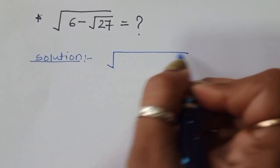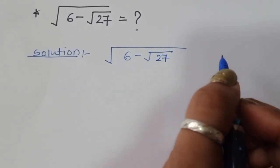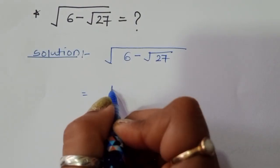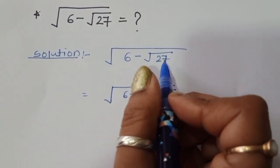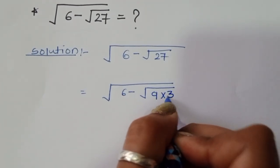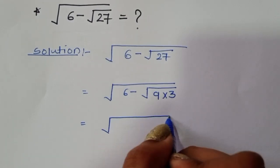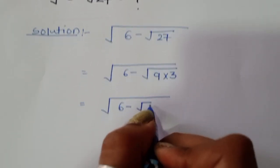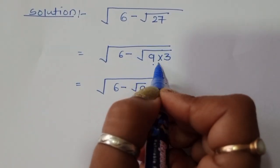We start with square root of 6 minus square root of 27. Now we can write square root of 27 as square root of 9 times 3, because 9 times 3 are 27. So this becomes square root of 6 minus square root of 9 times square root of 3.